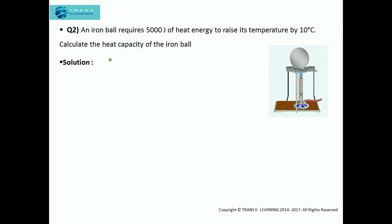Next question: An iron ball requires 5000 joules of heat energy to raise its temperature by 10 degree Celsius. Calculate the heat capacity of the iron ball. You can see here an iron ball and we are supplying heat to it. The heat energy supplied is 5000 joules, and on supplying this heat energy its temperature rises by 10 degree Celsius. We need to find the heat capacity of the iron ball. First we need to write down what is given and what needs to be found.